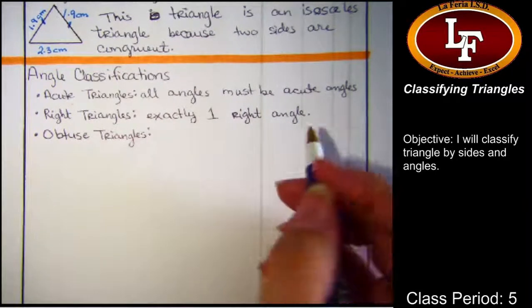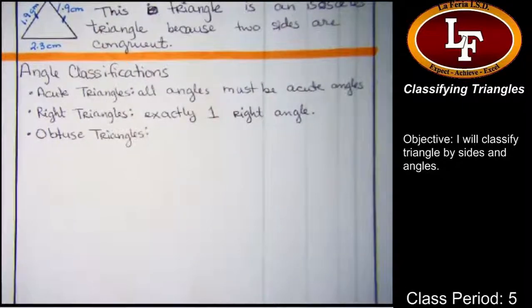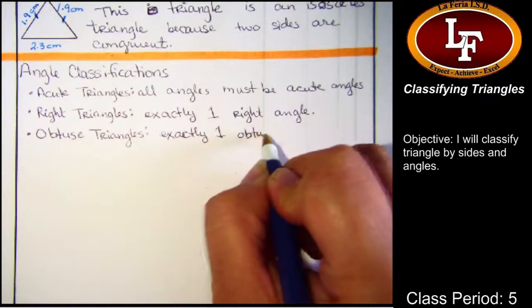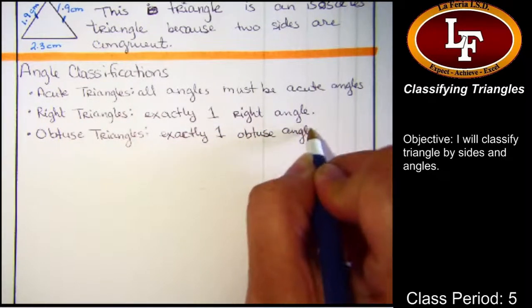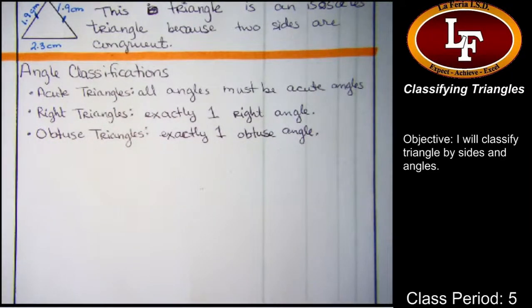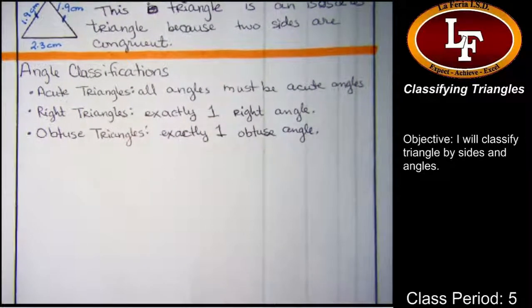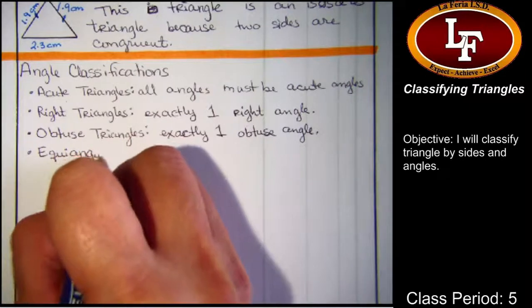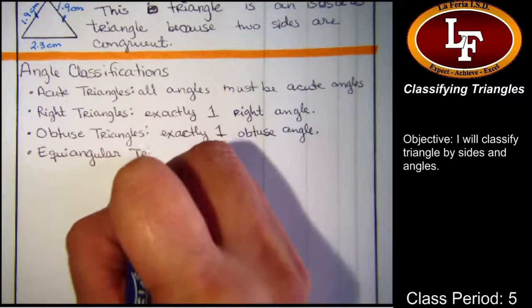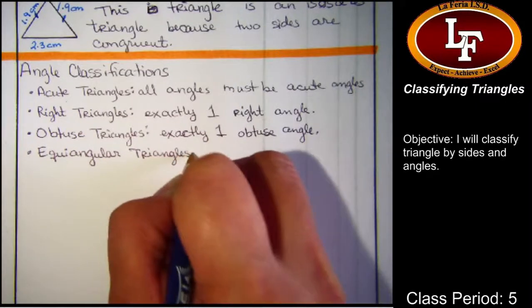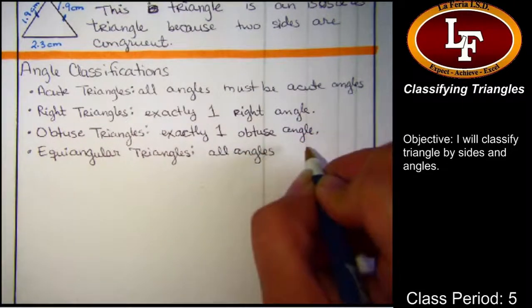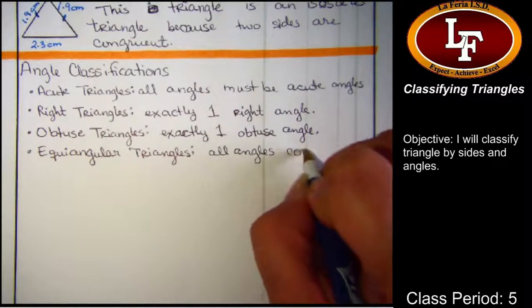The next one is the Obtuse Triangles Club. In order to be a member of the Obtuse Triangles Club, a triangle must have exactly one obtuse angle. Again, you may not have more than one. You may not have less than one. You may only have exactly one. And the last and very elitist triangle club is the Equiangular Triangles Club. And in order to be a member of the Equiangular Triangle Club, a triangle must have all angles congruent.